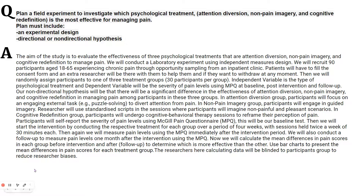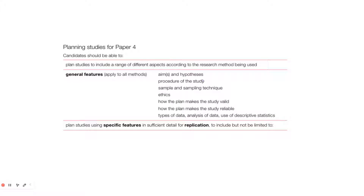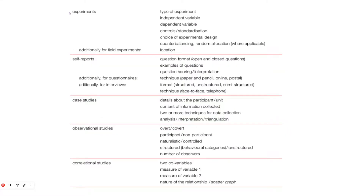You can pause the video here and go to the next slide. Here you can see I have mentioned all of the things that the examiner will want on your answer paper. Because it was an experiment and a field experiment, I did mention the location, which was the inpatient clinic. You also have to mention random allocation, the choice of experimental design — mine was independent measures design — control and standardization of the script, the dependent variable, the independent variable, and the type of experiment.